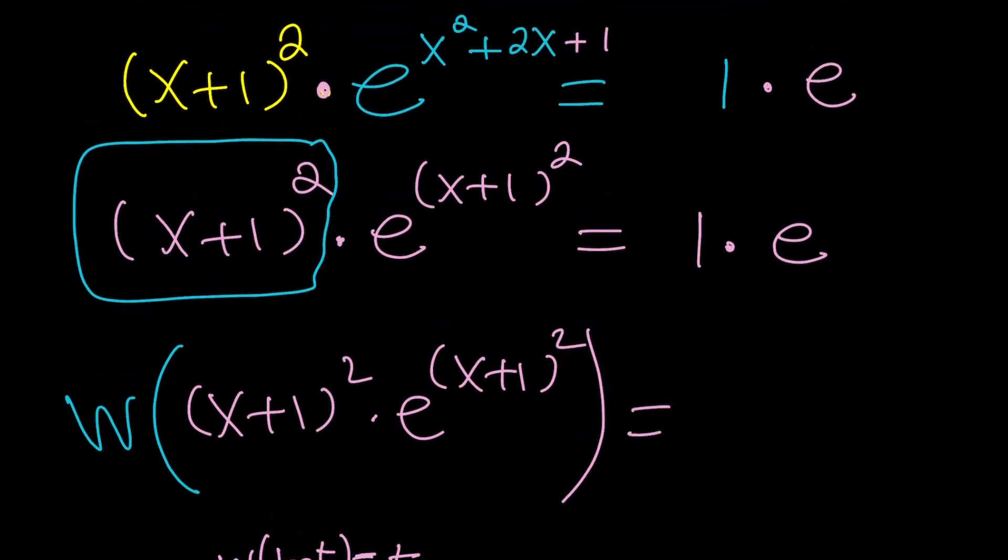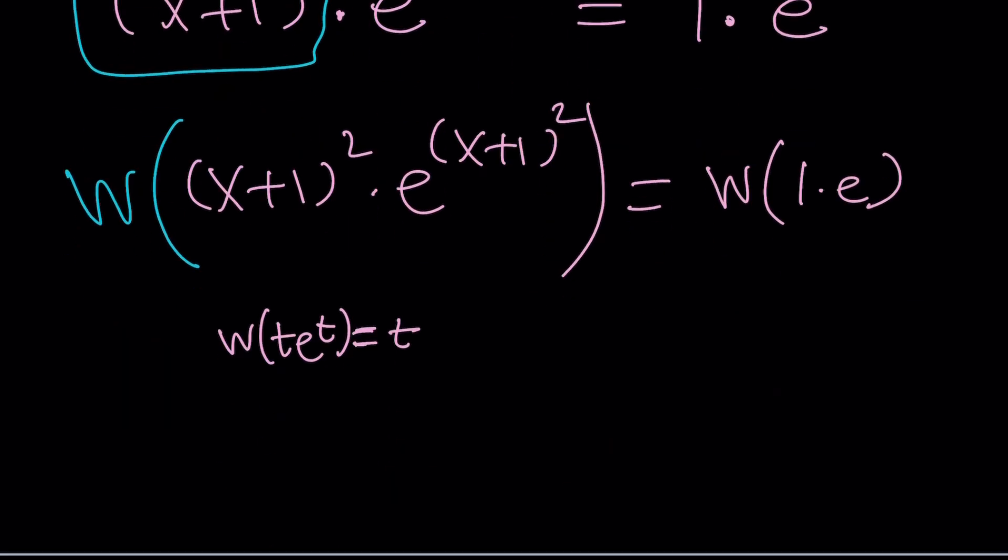So then we have to apply it on the right-hand side as well. But what are we going to get from there? Let's find out. First of all, we get from here x plus 1 squared.